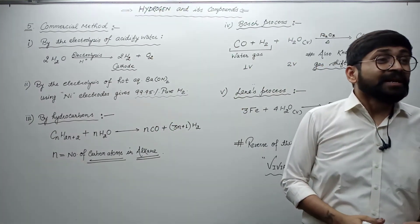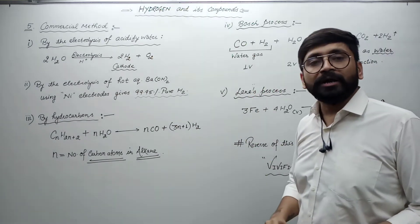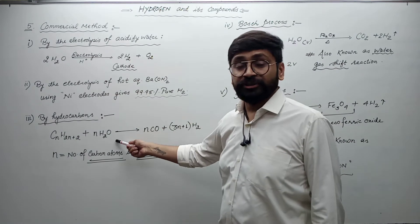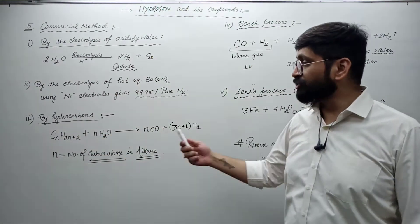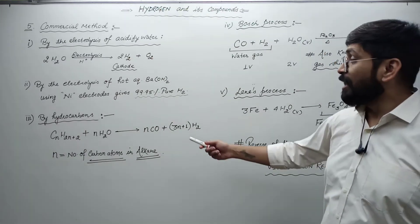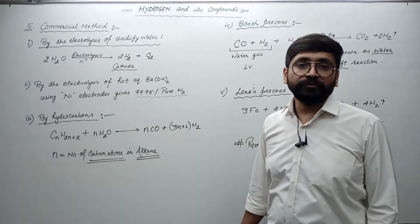Next process. About 70% of hydrogen world production comes from hydrocarbon hydrolysis. We have written a general formula here, CH2N plus 2, reacting with water. We get CO and 3N plus 1 moles of hydrogen.